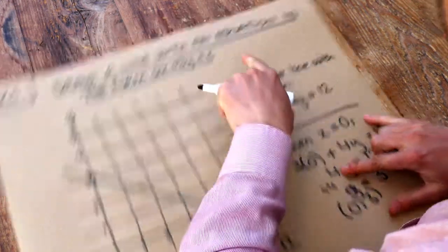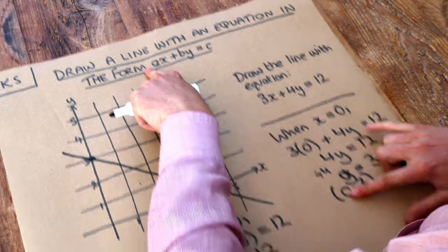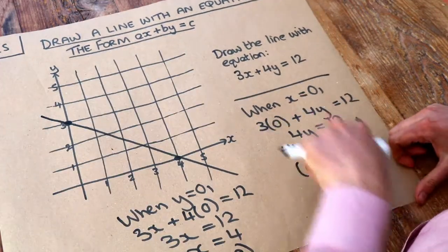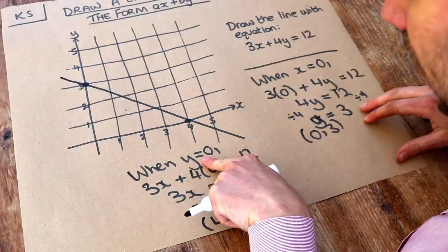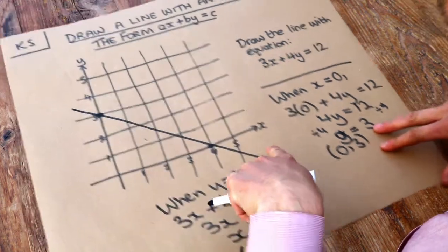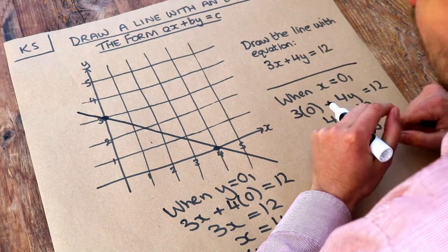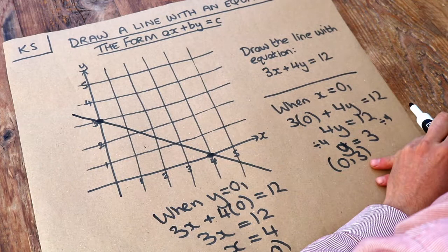Just to recap, if you have an equation of a line in this particular form, just make x zero and find out what y would be, and make y zero and find out what x would be and plot those two points. You could plot any points you like, but I tend to find that makes it easiest.